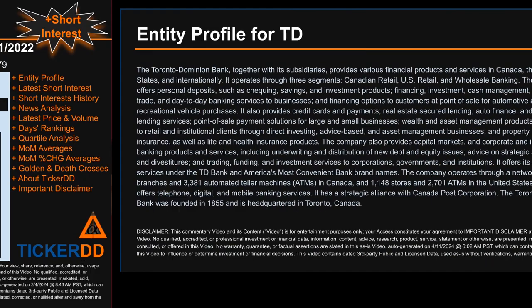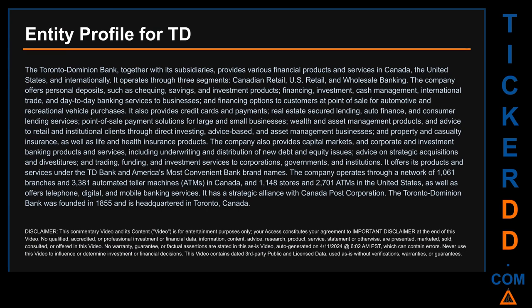Hello, my name is Carl. I searched the public web to find information about the company behind this ticker. The Toronto-Dominion Bank, together with its subsidiaries, provides various financial products and services in Canada, the United States, and internationally. It operates through three segments: Canadian Retail, U.S. Retail, and Wholesale Banking. The company offers personal deposits such as checking, savings, and investment products, financing, investment, cash management, international trade, and day-to-day banking services to businesses, as well as financing options for automotive and recreational vehicle purchases. It also provides credit cards, payments, real estate secured lending, auto finance, consumer lending, and point-of-sale payment solutions.